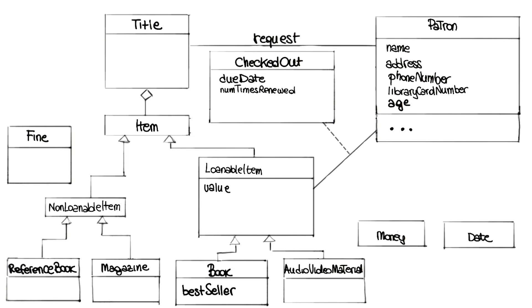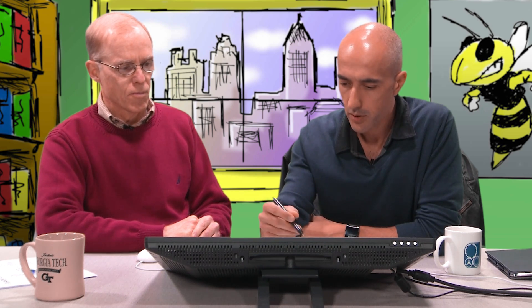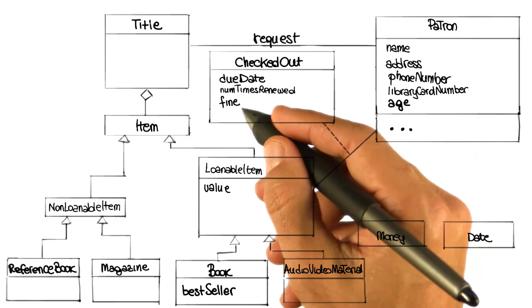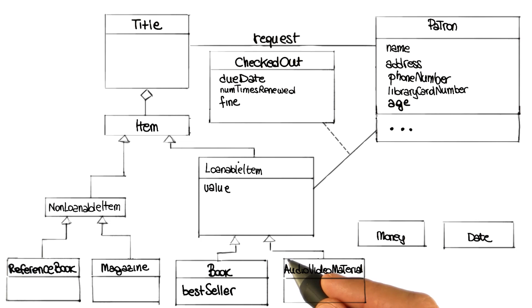Can you do the same thing with fine? Isn't fine a property of the loan? Yeah, actually it is, because a fine is a fine for a specific loan, right? That's correct. So we don't need to represent fine as a class. We can just transform that into an attribute that we can put into the checked out association class.